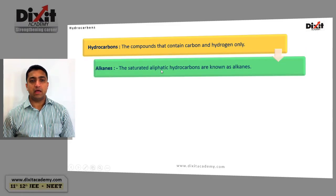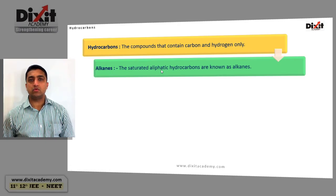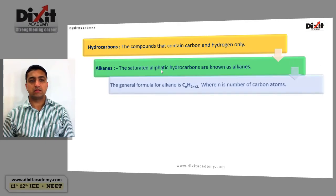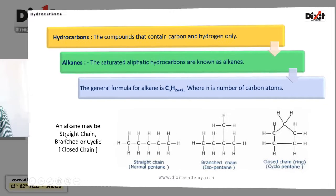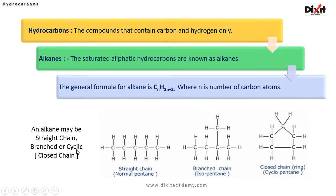The saturated aliphatic open chain hydrocarbons are known as alkanes. The general formula for alkane is CnH2n+2, where n indicates the number of carbon atoms. An alkane may be straight chain, branched chain, or cyclic. For example, n-pentane has all carbon atoms linked linearly — it is a straight chain alkane. Isopentane is a branched chain alkane, and cyclopentane, where all carbon atoms are bonded in a cyclic way, is a closed chain alkane.